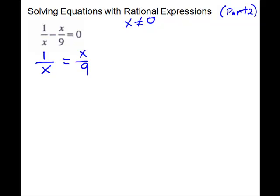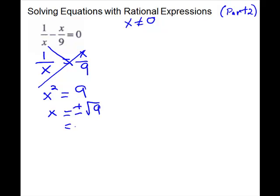Do your cross products. On one diagonal you have x times x, which is x squared. The other diagonal gives 1 times 9, which is 9. So x squared equals 9 — take the square root of both sides, giving x equals plus or minus 3. We threw away 0, so we're okay. We have two solutions: x equals negative 3 and x equals positive 3.